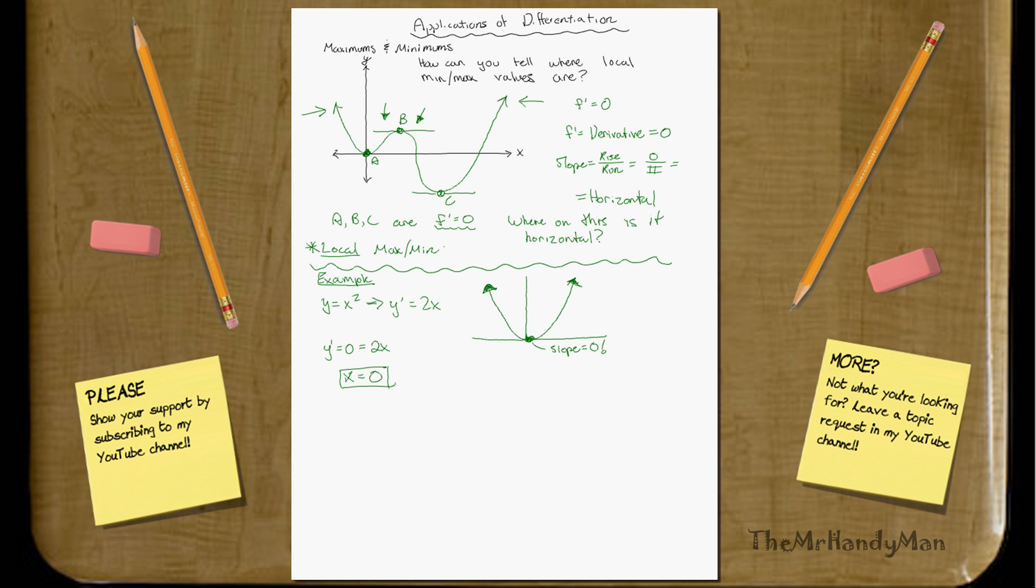So that just shows us that that's the point where the maximum or the minimum happens. In our case, it's a minimum. We still don't know mathematically how to determine whether this is a maximum or minimum. And that will actually be explained in the next video.